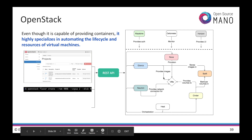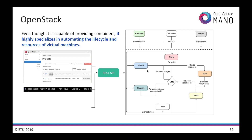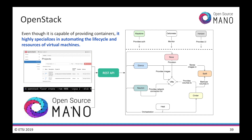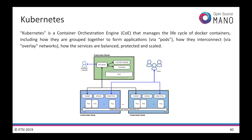Though OpenStack is capable of providing containers, it highly specializes in automating the lifecycle and resources of virtual machines. Through different software modules, it provides all the resources a VIM requires, including compute, images, networks, storage, telemetry, security, simple management, and template-based orchestration. It exposes all of these services through a rich REST API, which users can consume directly through a dashboard or CLI. In the NFV world, operators implementing network services do not have time to deal with virtual machines directly. That is where OSM comes into the picture, abstracting the operator from VM management towards network service end-to-end orchestration.